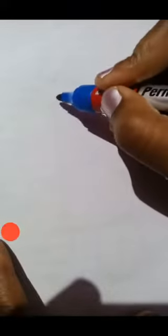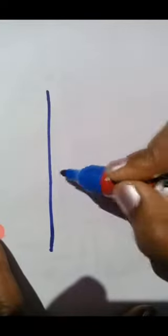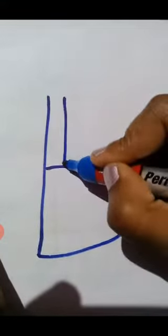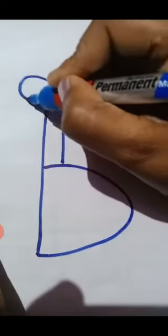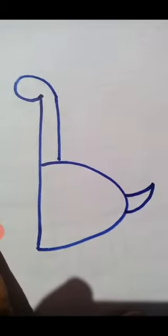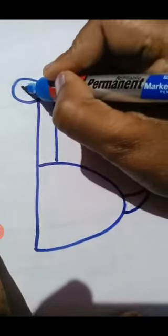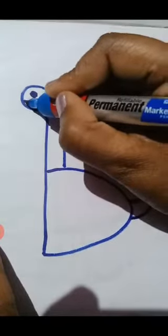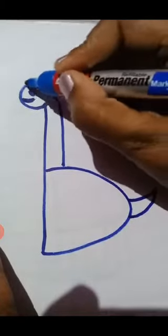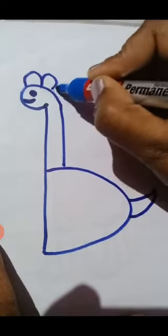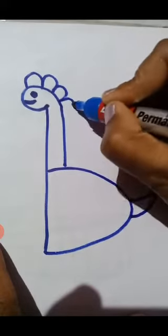First of all, we will make small d. Then one more standing line and half circle. After that, from the back side, we will make one tail. And in this circle, we will make its eye and mouth. And then draw half circle over its neck.